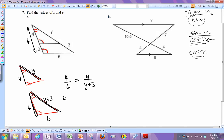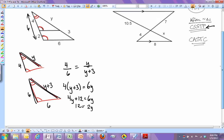So then when I cross multiply I get 4 parentheses y plus 3 equals 6y. And then when I work this out I'm going to get 4y plus 12 equals 6y. So 2y equals 12. And then y ends up being 6 out of that.